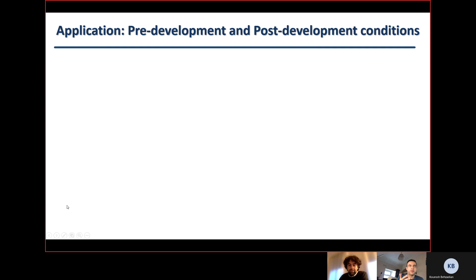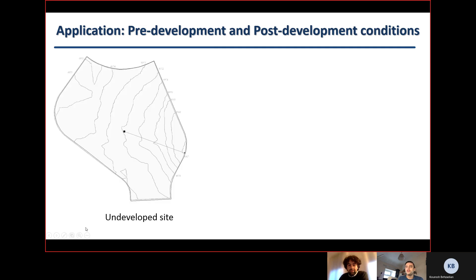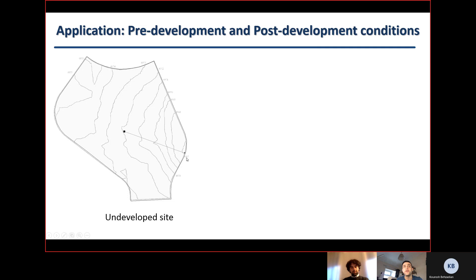Before going to the tutorial, let's look at the problem description. We have a catchment situation — before development, we can call it the undeveloped site. You can see the contour lines here, and this is the area we are going to develop into an urbanized area. The contour lines show slope gradients decreasing from 4,979 to 4,967 feet, with slopes flowing toward the outlet point at the bottom.